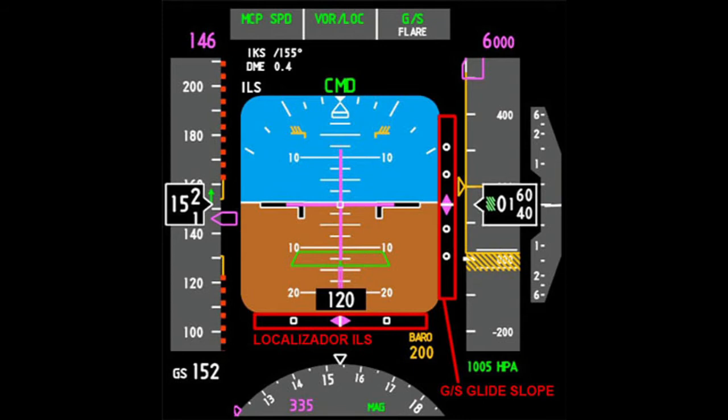If you look at the pink diamond, it will be in the horizontal path. If you look at the glide slope, it will show whether the aircraft is on the correct vertical path.